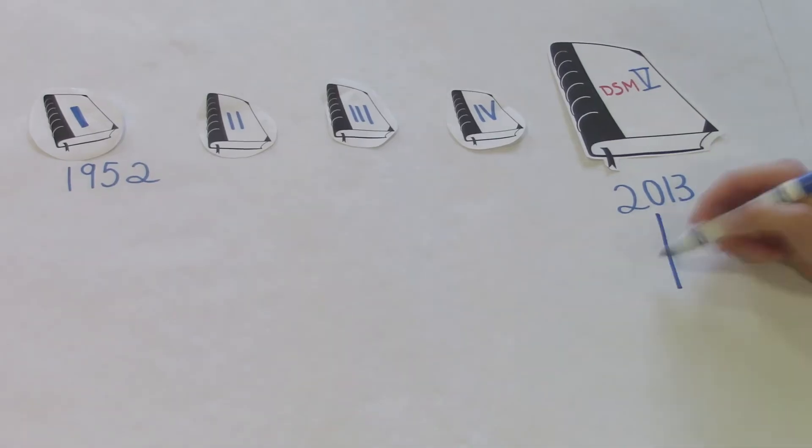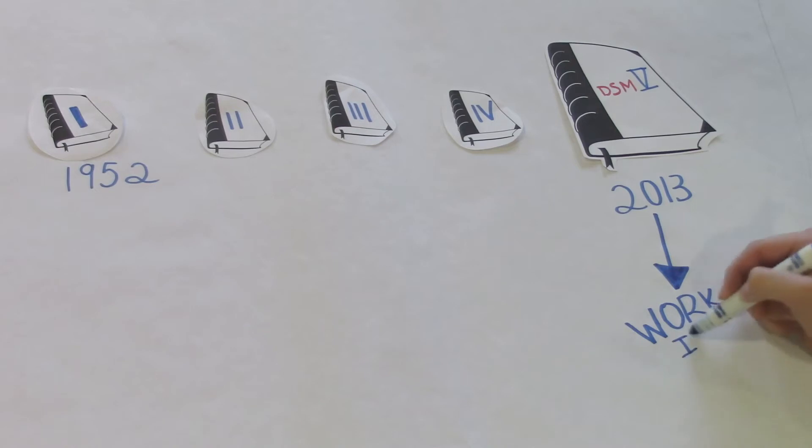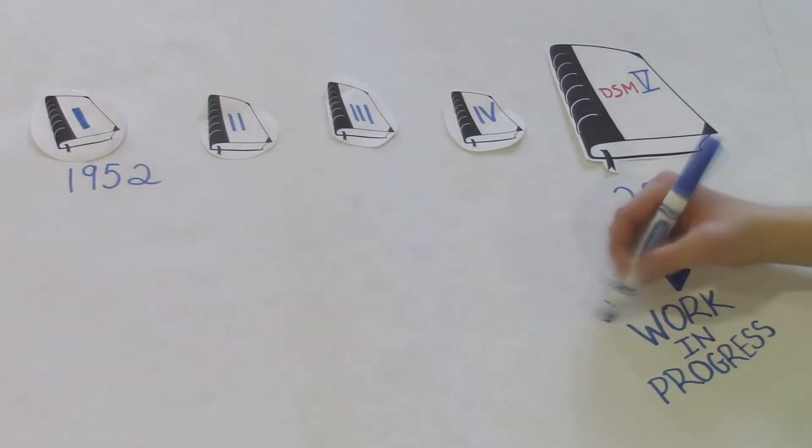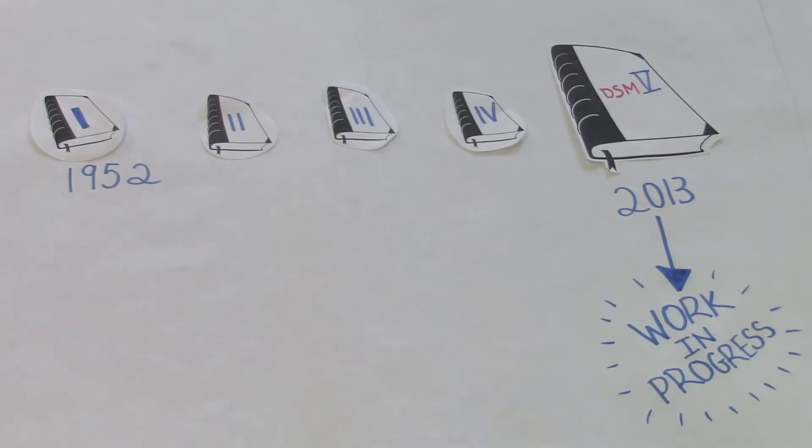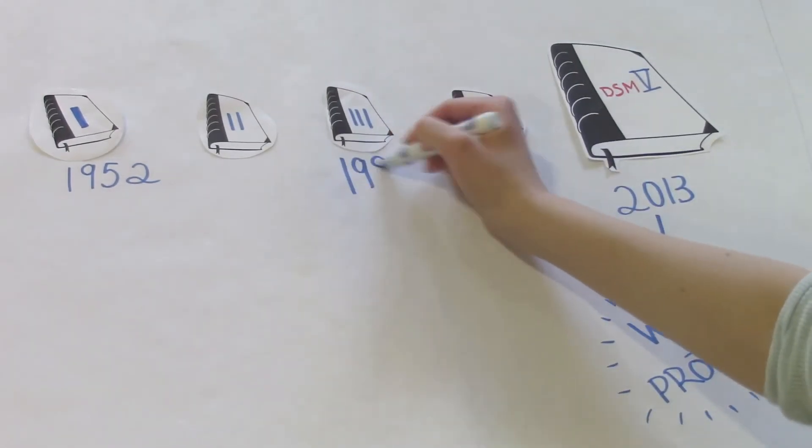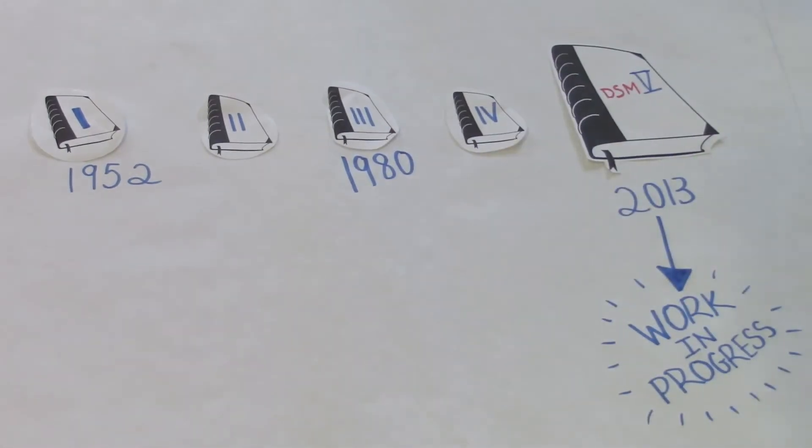One of the cool things about the DSM is that it will always exist as a work in progress. Each edition provides a snapshot of the perceptions of mental illness at the time. For example, it wasn't until the DSM-3 in 1980 that homosexuality was removed as a mental illness, reflecting society's growth away from the heavy stigma associated with many sexualities.